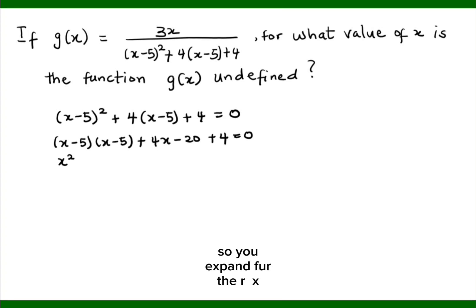So you expand further, x squared minus 5x minus 5x plus 25, then plus 4x, negative 20 plus 4, that's negative 16, equals 0.